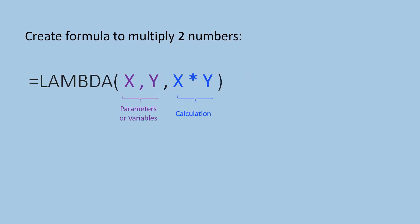For example, if you want to create a formula that multiplies two numbers using Lambda, you have to write in Excel: equals Lambda, open brackets, X, Y — which are your parameters or variables — comma, X times Y — which is the calculation — and press Enter.